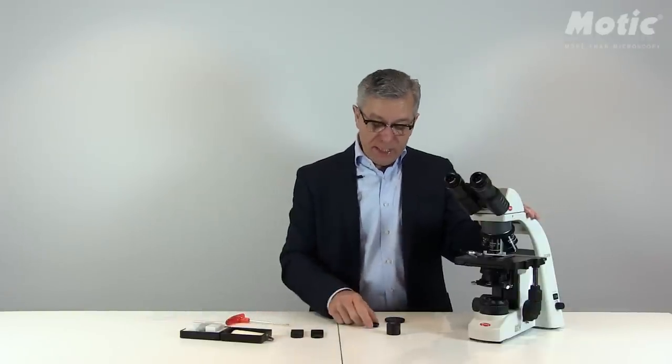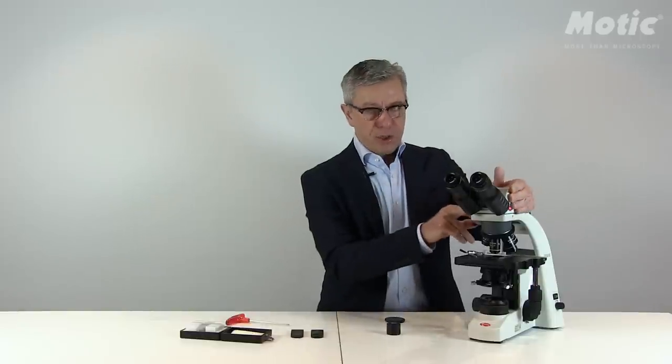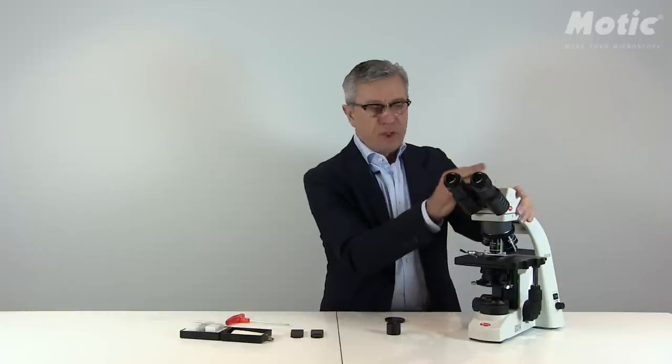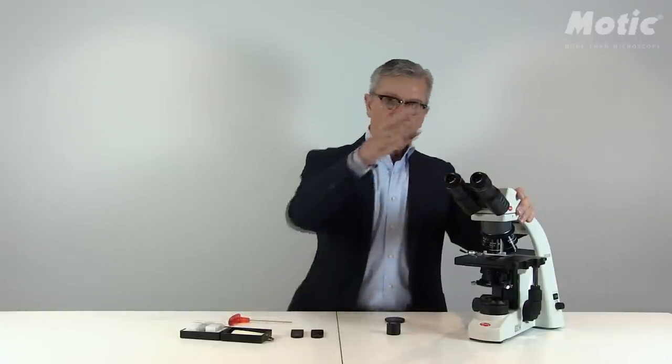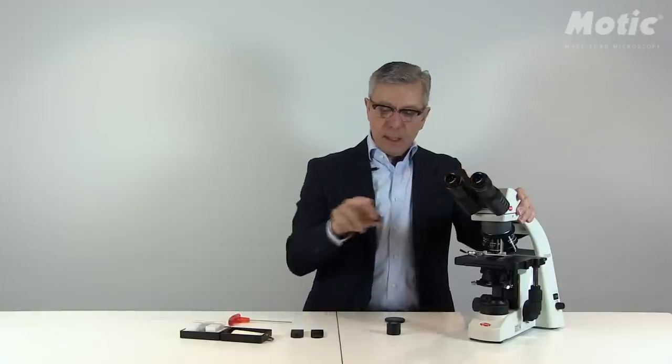As a second hardware tool, we need a so-called analyzer, which has to be placed in between the tube and the upper part of the microscope. So later on, I have to remove the tube by the Allen key and have to place the analyzer on top of the microscope. This analyzer generally is orientated in 90 degree position to the polarizer.